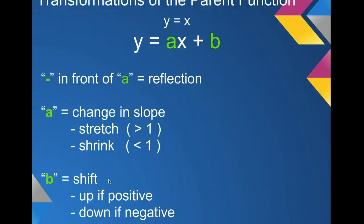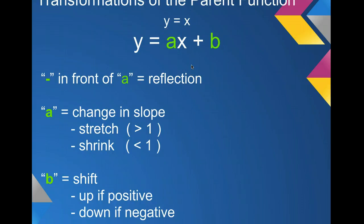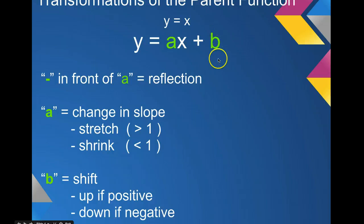Now let's look at the transformations of the linear parent function. We get away from m being slope, and now we call this a. As we move on through different types of functions, we tend to use a, b, c, d as the transformations within the function. We will call the transformation to the slope a, and the transformation to the y-intercept b.